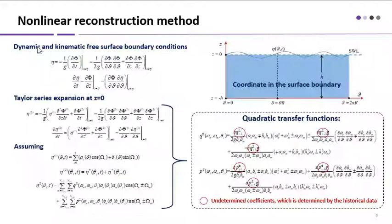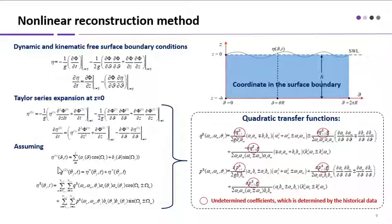This page shows how to build the approximate expressions of the QTFs. A new coordinate on the surface boundary of the cylinder is used. In this coordinate, the dynamic and kinematic free surface boundary conditions are shown in these two equations. Using Taylor series expansion, we can obtain these equations. It should be mentioned that the accurate expressions of QTFs are unachievable, because the information of the outer flow is unknown. But we can still find some useful terms to build the approximate expressions of the QTFs. The undetermined coefficients in the expression can be determined by using the historical data of monitored weight elevations.